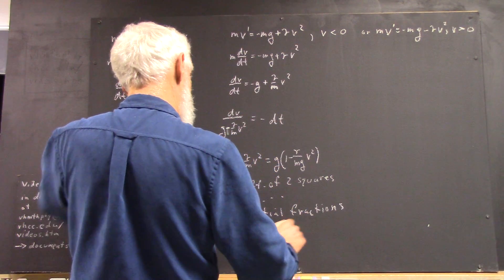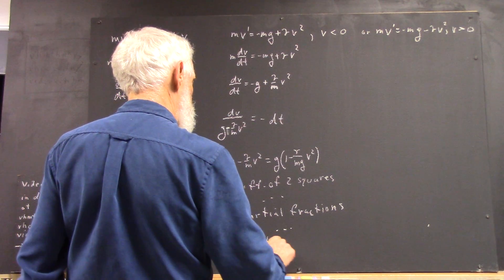Factor out the G, you integrate, you get your V of T.